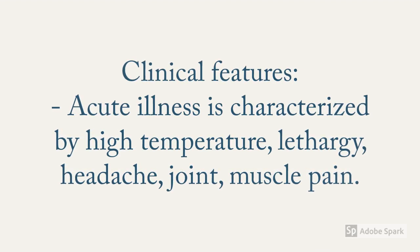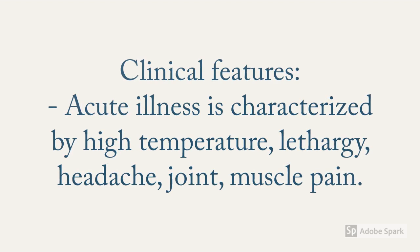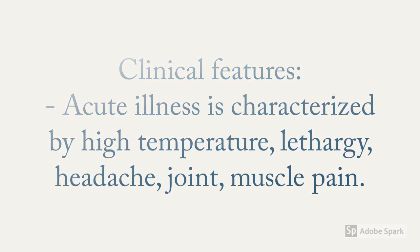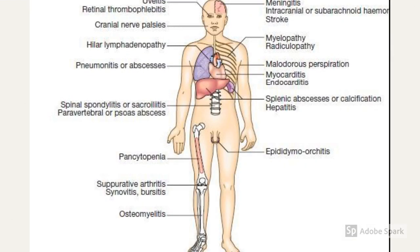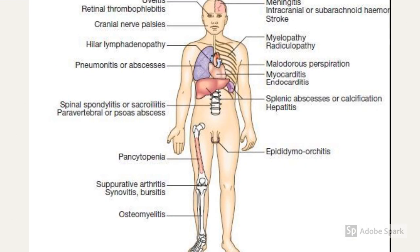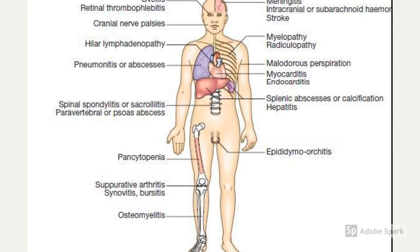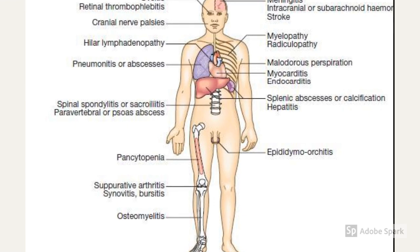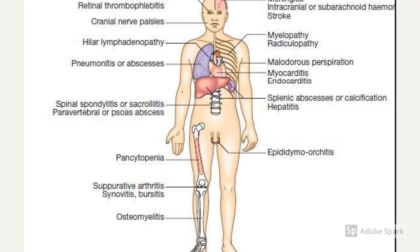Any of the organs can be involved. Brucella melitensis has a tendency to cause acute and more aggressive illness, whereas Brucella suis has a tendency to cause focal abscesses. Brucella can cause infection in any organ or system — nervous, cardiovascular, respiratory, gastrointestinal, or musculoskeletal — ranging from uveitis or meningitis to septic arthritis or osteomyelitis.